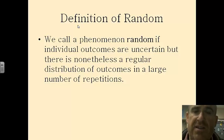And again, the coin tossing idea is the same. A coin is random because we don't know from time to time what's going to happen. Is it going to be heads? Is it going to be tails? We don't know. But if we do a large number of repetitions, we would expect to see a regular distribution. We would expect to see 50% heads, 50% tails or something close to that.